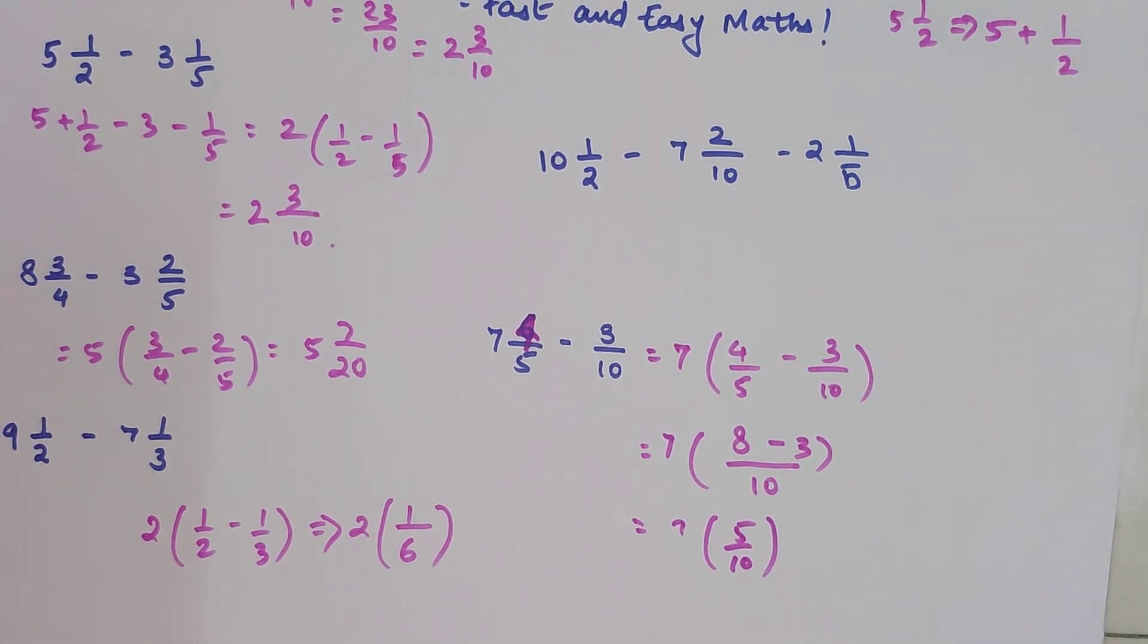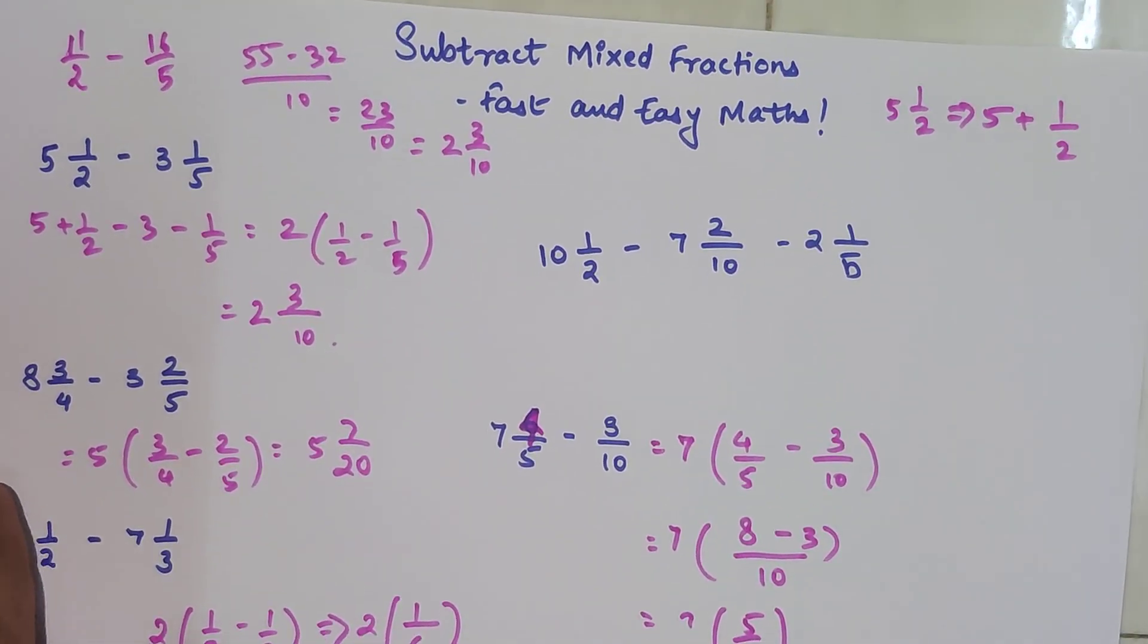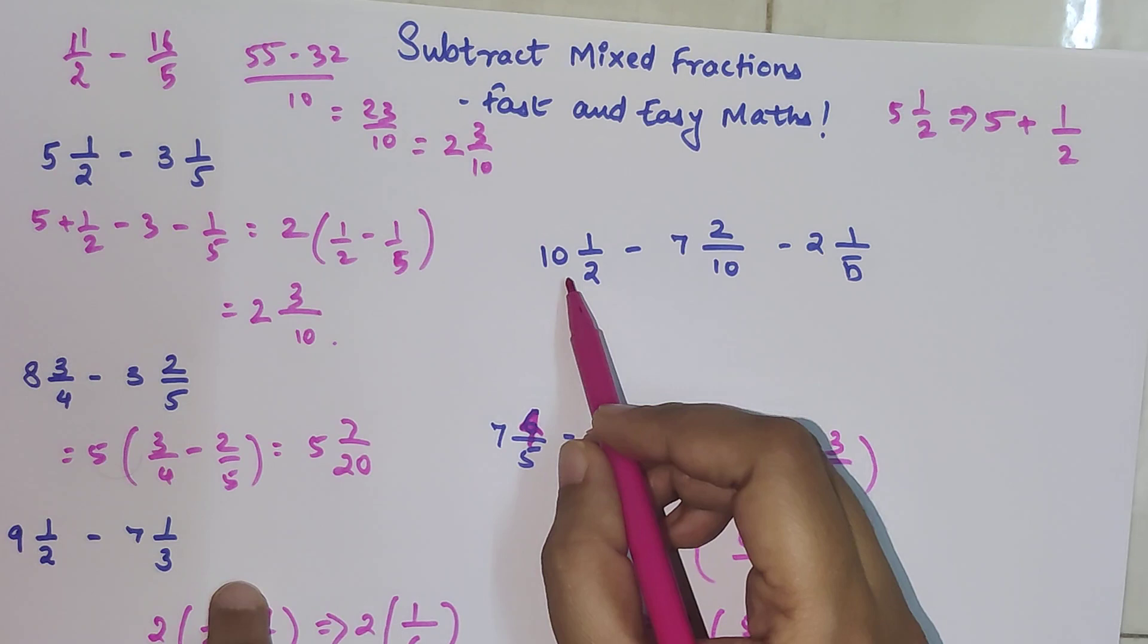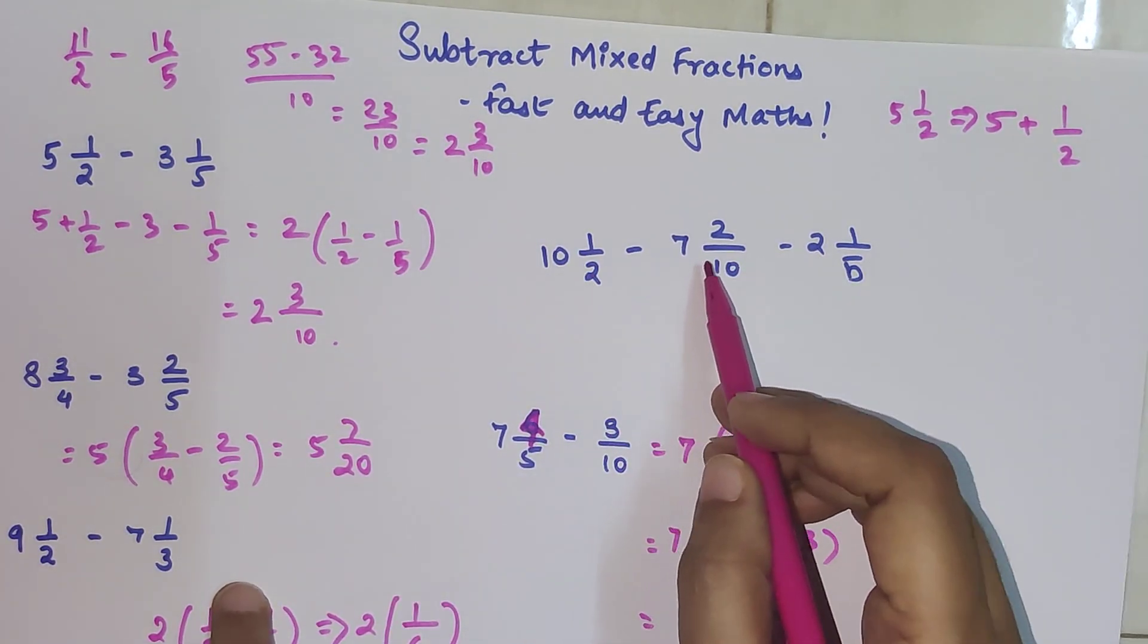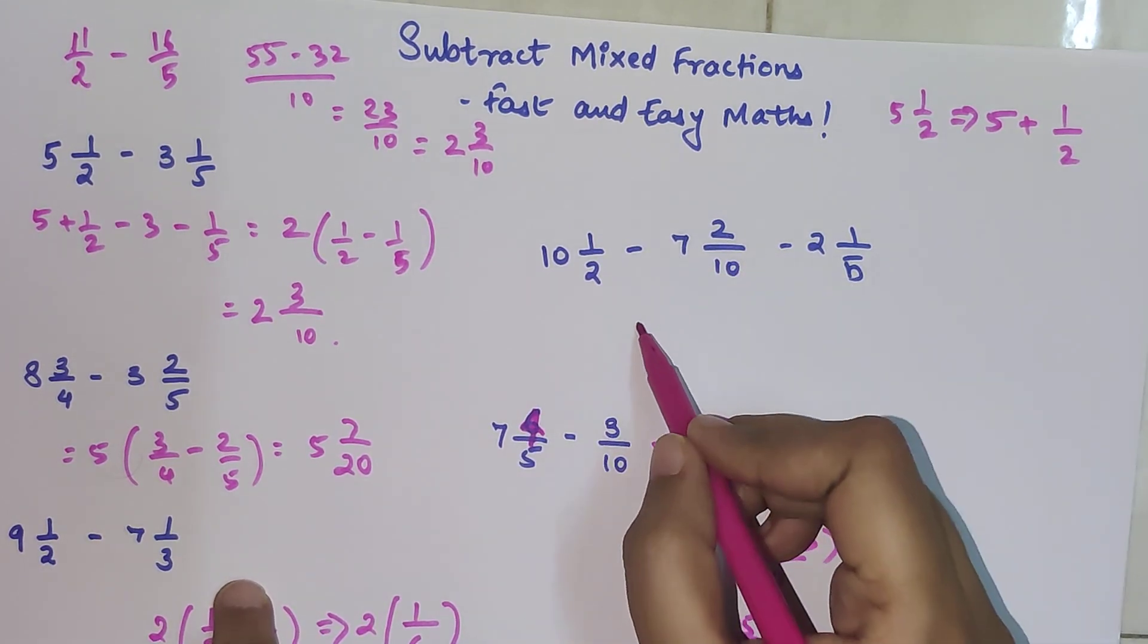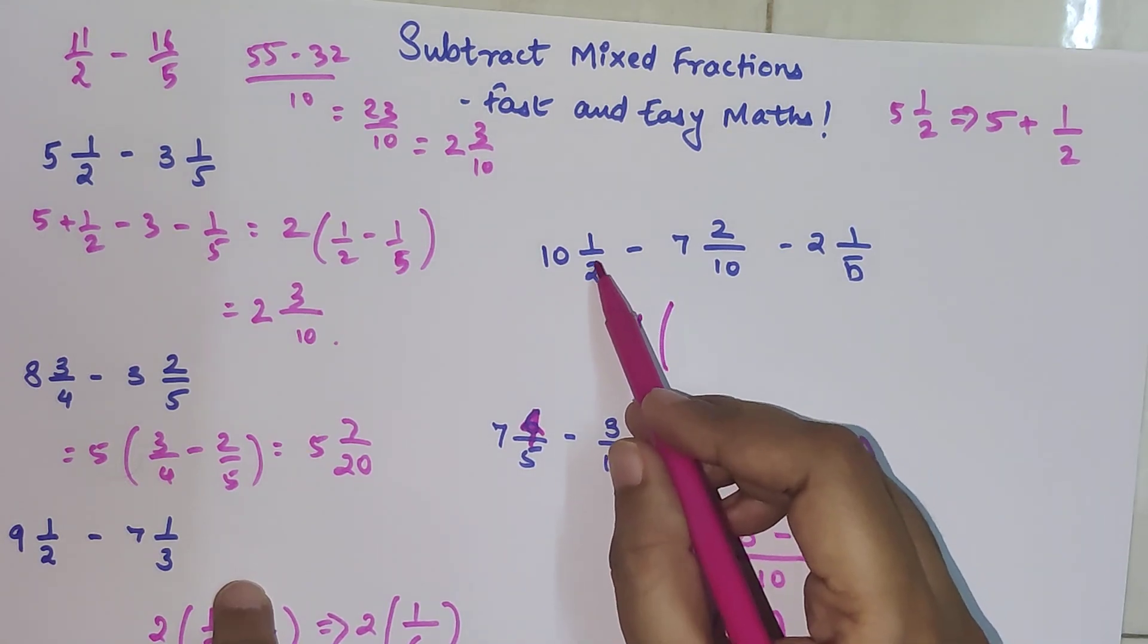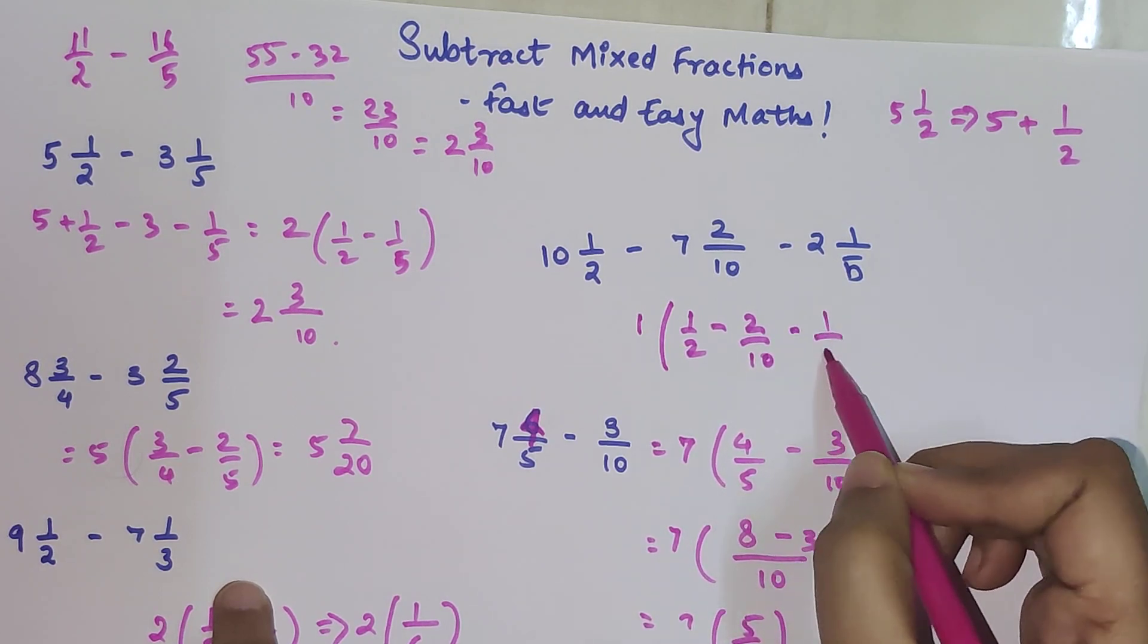I hope you're getting how to calculate or do the subtraction when it especially comes to mixed fractions. Now this is one example where I've taken more than 2 mixed fractions. In that case also we will do 10 minus 7 is 3, 3 minus 2 is 1.